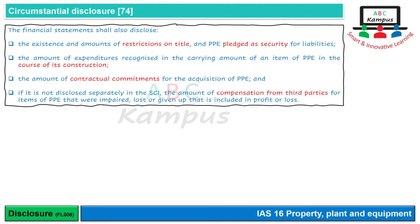Agar statement of comprehensive income mein separately disclose kar diya ho to theek hai, lekin agar separately disclose nahi kiya aur hume koi compensation mili thi third party se property plant equipment ki wajah se — for example impairment par insurance company se claim mila, ya loss/damage par insurance company, vendor, manufacturer, ya government se compensation mili — to wo compensation income ke taur par show karni hoti hai aur IAS 16 ke disclosures ke saath show kiya jata hai.